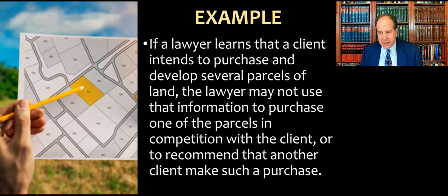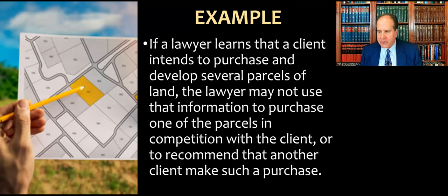They give an example: a lawyer learns that a client intends to purchase and develop several parcels of adjacent land — maybe to put in a mall, shopping center, or subdivision. The lawyer cannot use that information to purchase one of the parcels in competition with the client, or to recommend that another client make such a purchase. If you know your client intends to buy ten adjacent parcels and you rush in to buy one hoping to resell it at an elevated price, that's advantageous to you but disadvantageous to your client — that's the classic scenario under 1.8b.